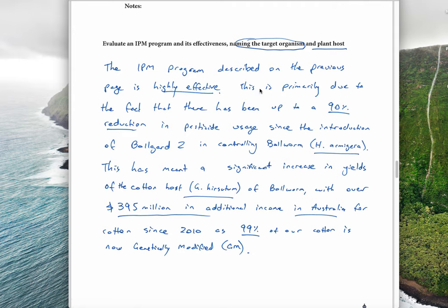I want them to see that it's highly effective. There's a 90% reduction in pesticide usage. I know the scientific name of the pest, I know the scientific name of the plant. I also know the dollar saving or the increase in revenue because of using GM cotton. And then lastly, there's another statistic here. 99% of our cotton is genetically modified, which shows that it's obviously pretty good if basically every farmer is using it. So this is a really good example of a full mark answer.